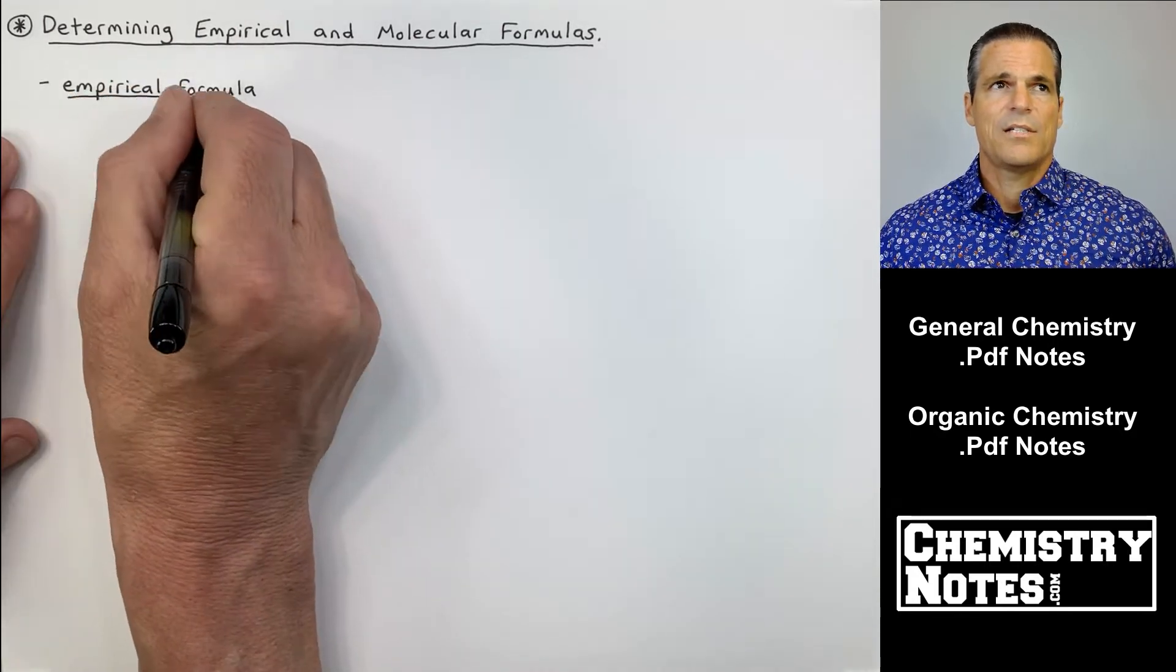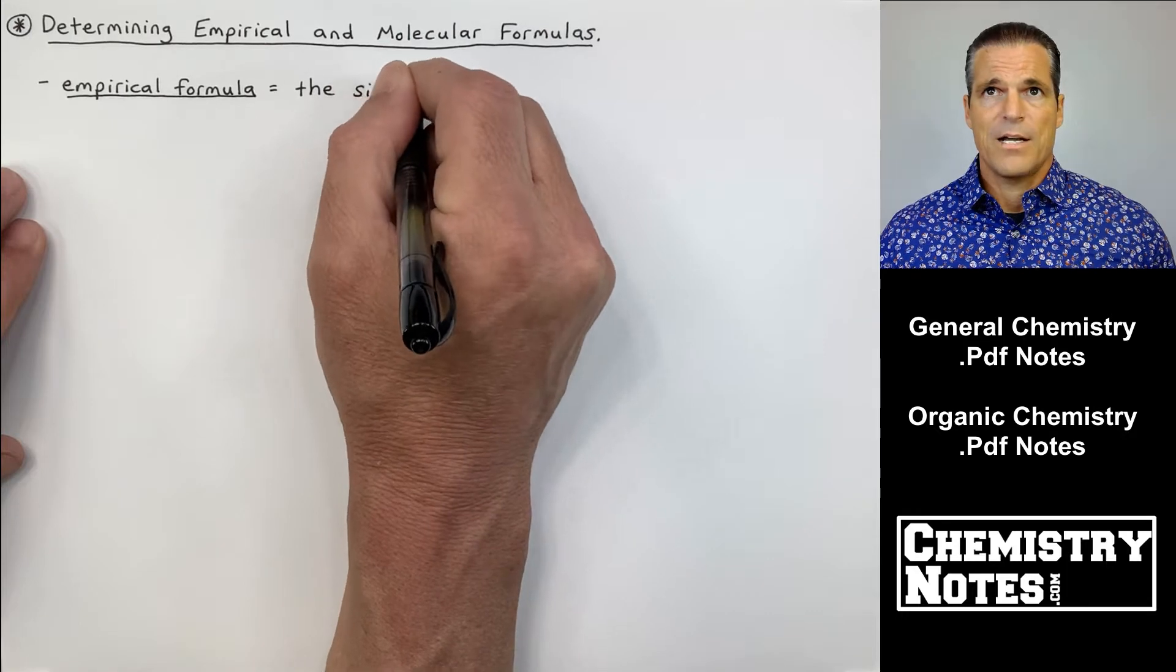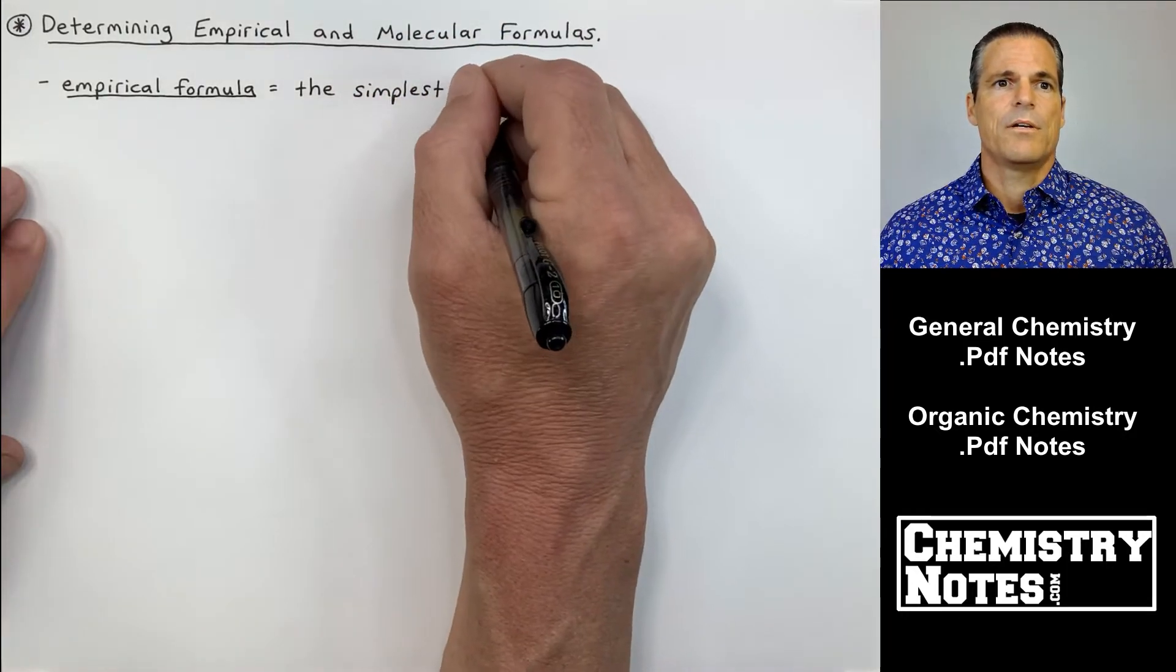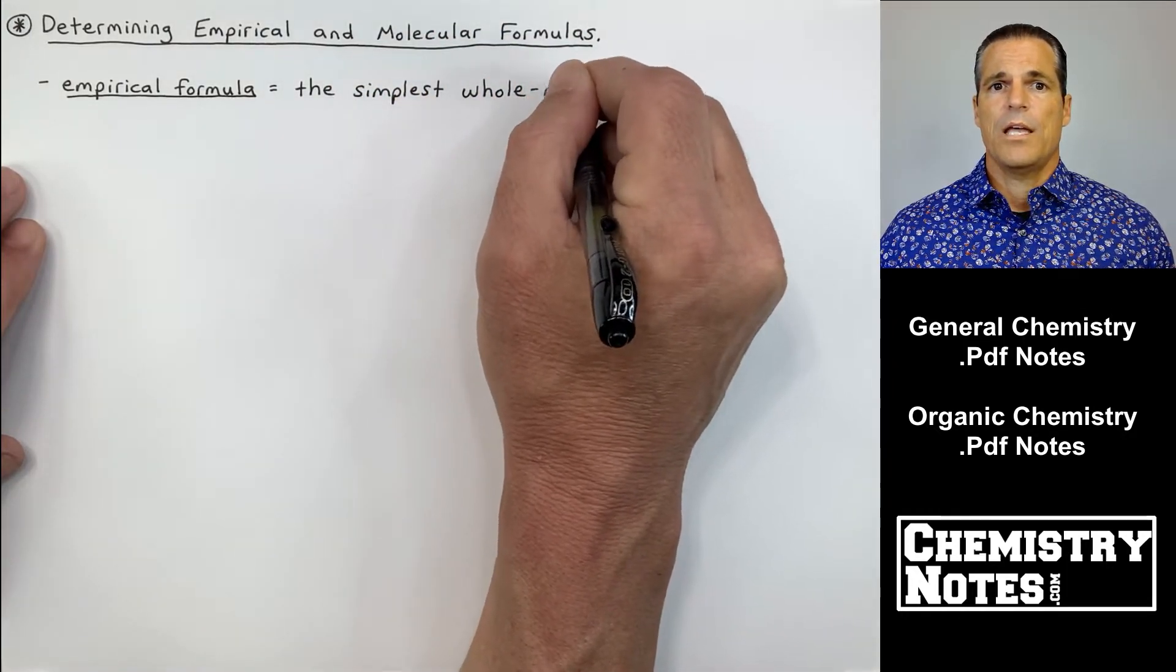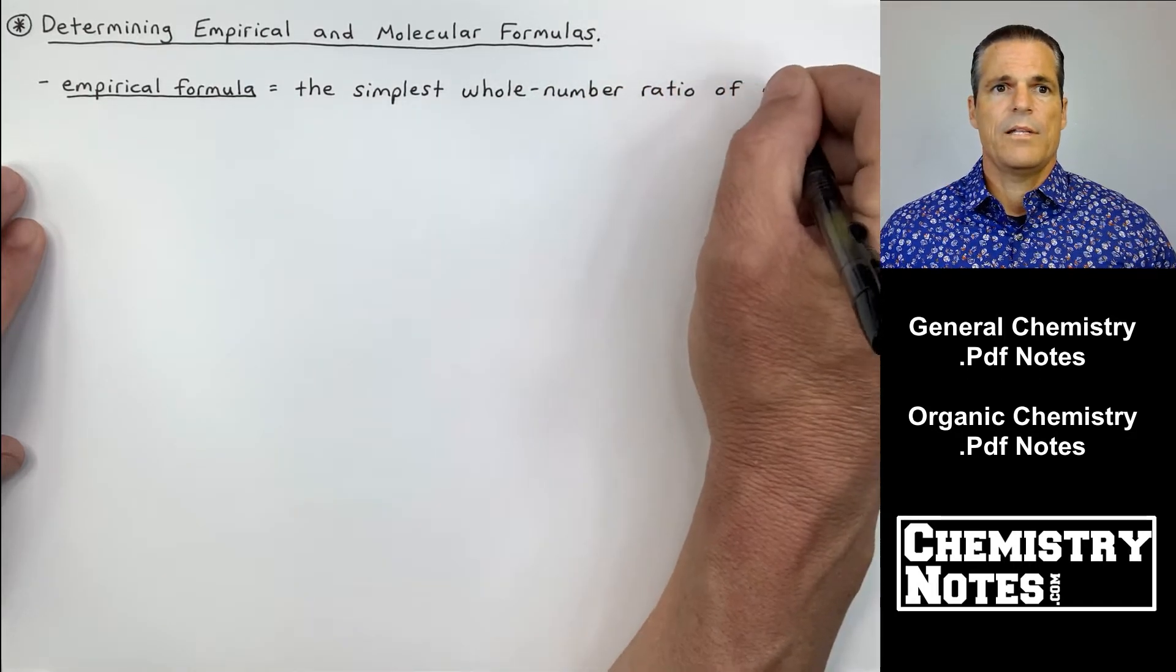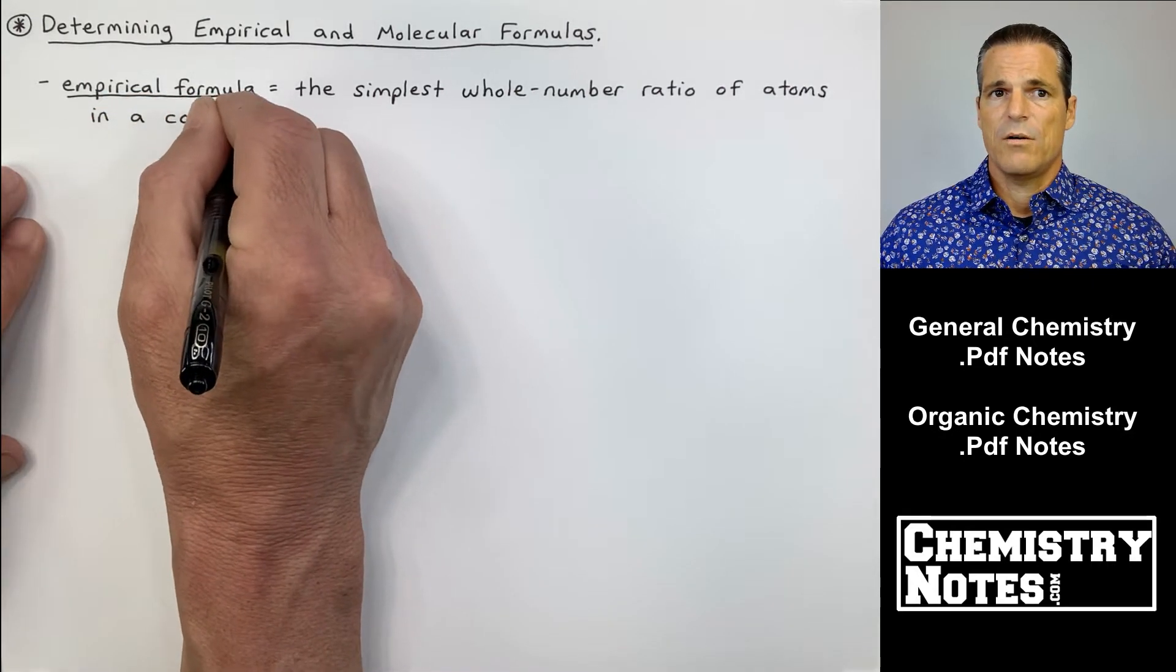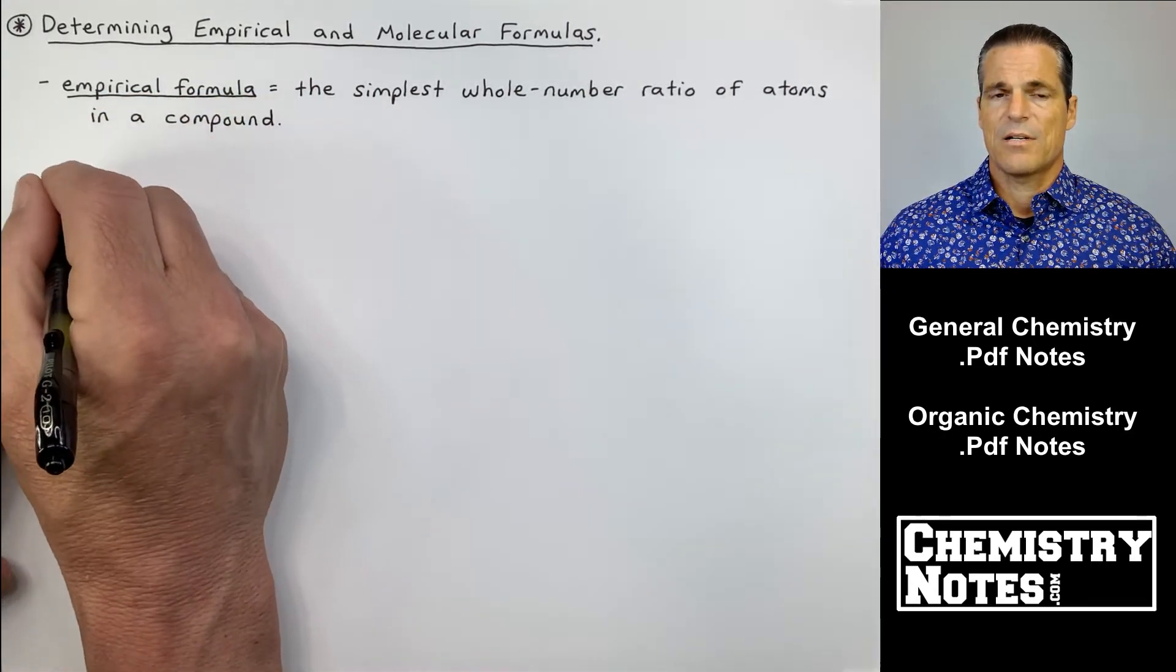Sample problems and examples are the best way to retain this information. So, determining empirical and molecular formulas. What is an empirical formula? An empirical formula is the simplest whole number ratio of atoms in a compound.